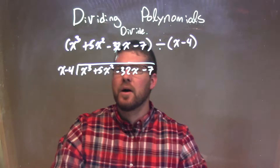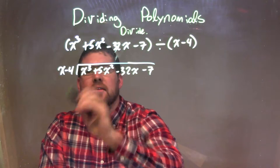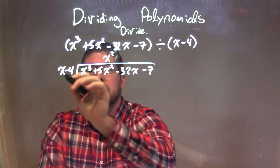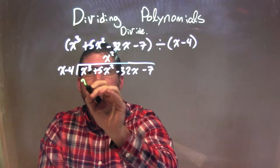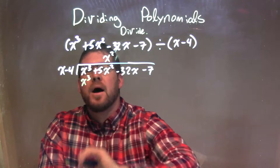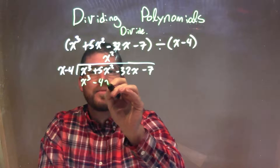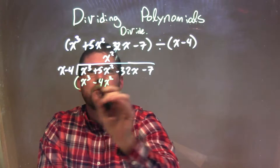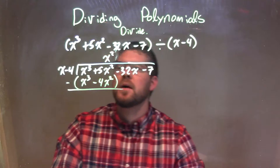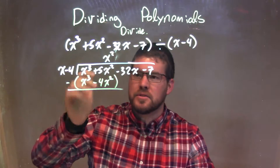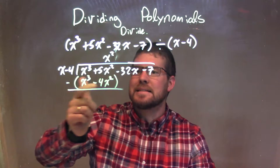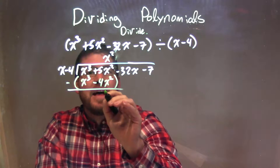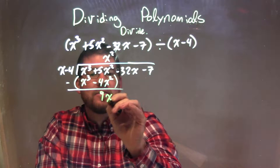So now I'm going to ask the question to myself: what times x gives me x to the third? That's x squared. So I have x squared times x is x to the third. x squared times the minus 4 is the minus 4x squared. So subtract the two — top from the bottom. x to the third minus x to the third is 0, but 5x squared minus the negative 4x squared is like adding a positive 4x squared, and that's just 9x squared.